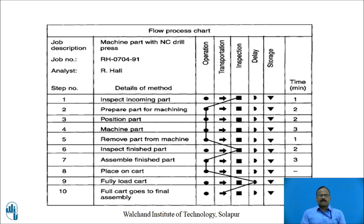This is a flow process chart for a material type. Six symbols are used and there are ten elements in total. This chart shows the movement of material from one destination to another for an existing way of doing work. Study this flow process chart and try to draw one based on your intuition for a material moving from one destination to another, including the six symbols. You can construct a chart for the movement of material, equipment, or a man.